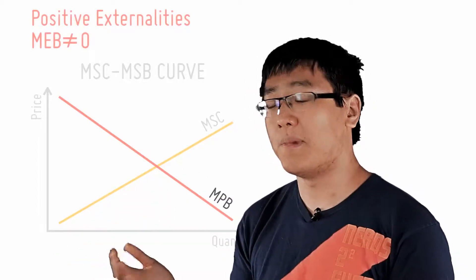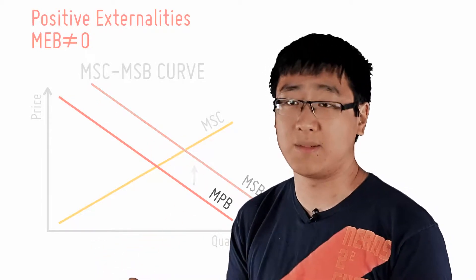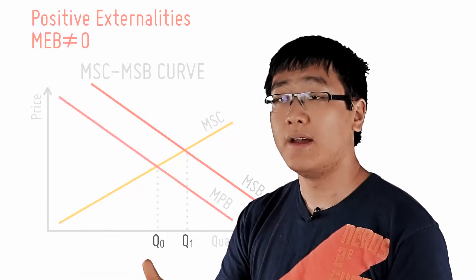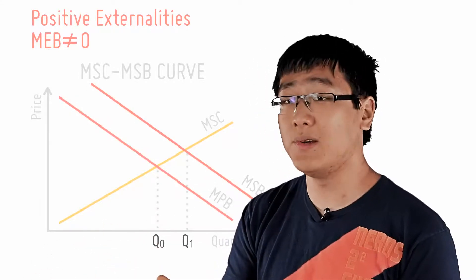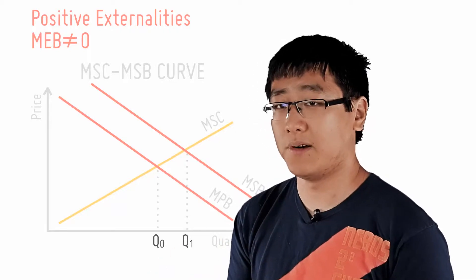However, there is indeed marginal external benefit. This causes MPB to be different from MSB and MSB will be higher than MPB due to the existence of the MEB. As an individual, I will consume where MPB equals to MPC at Q0.